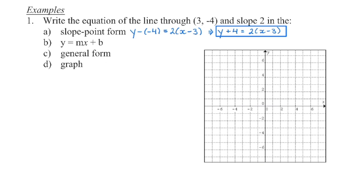So we're going to write y minus the y-coordinate equals the slope times x minus the x-coordinate. Then multiply those signs — minus times a negative gives a positive — and this is slope-point form.